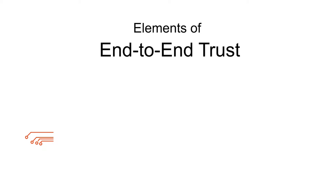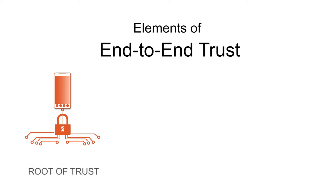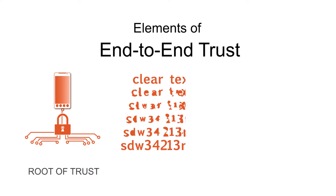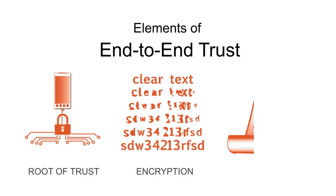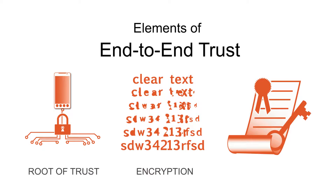In summary, end-to-end trust is achieved when the integrity of each device is ensured, when data is protected at rest and in transit, and when credentials of each device in a system are verifiable.